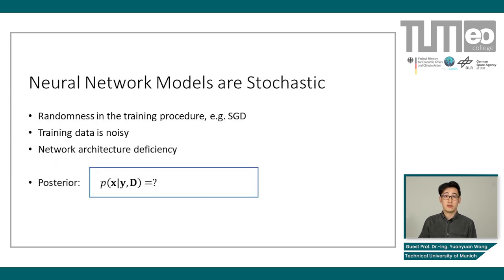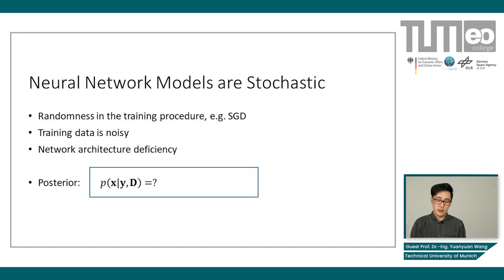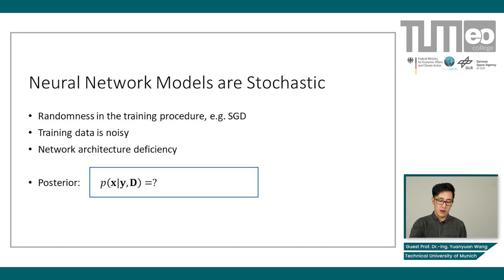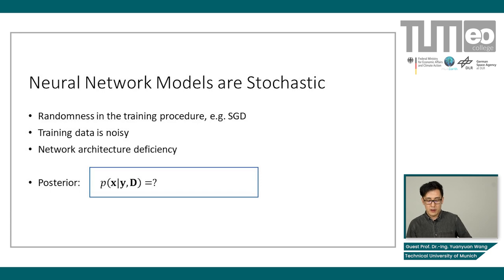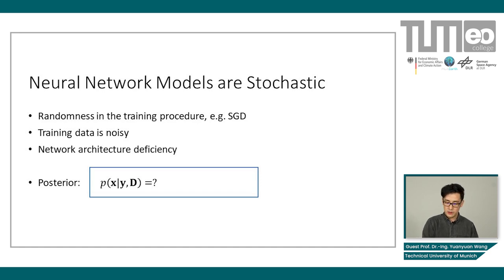As you can see from the previous slide, neural network models are stochastic because there's randomness in the training procedure and the training data is noisy. Additionally, the network architecture may also have deficiencies for your problem. So now we know that the model is stochastic instead of deterministic.